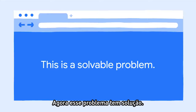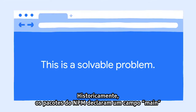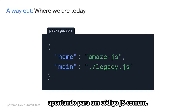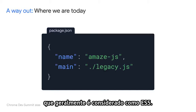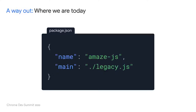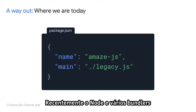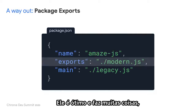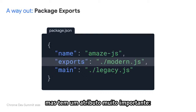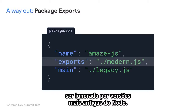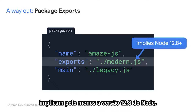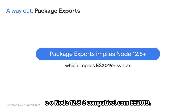Thankfully, this is now a solvable problem. Historically, NPM packages declared a main field pointing to some CommonJS code, which is generally assumed to be ES5. Recently, Node and a number of bundlers have standardized a new field called exports. It does a lot of things, but it has one very important attribute — it's ignored by older versions of Node. This means that modules referenced by the exports field imply a Node version of at least 12.8, and Node 12.8 supports ES2019. That means modules referenced by the exports field are modern JavaScript.